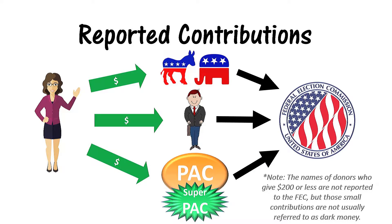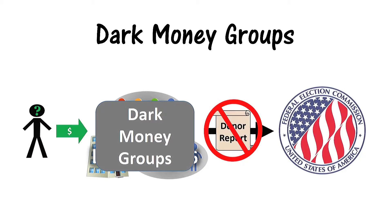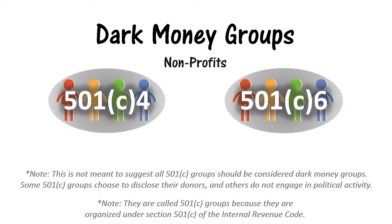However, other types of organizations that engage in political activity — often referred to as dark money groups — don't have to report their donors to the FEC. Let's examine various types of dark money groups. There are two types of nonprofit organizations most commonly associated with dark money.